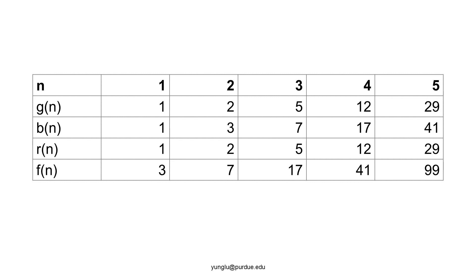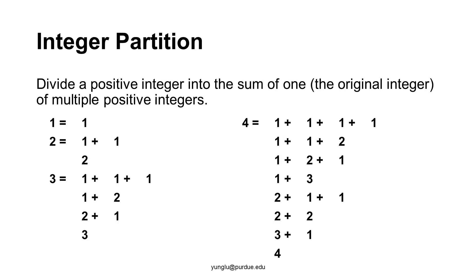The next problem is integer partition. This problem integrates multiple concepts related to recursion, and we will study it in detail over several lectures. The integer partition problem breaks a positive integer into the sum of one or several positive integers. If only one integer is used, it is the original integer itself. By allowing the original integer itself, this problem is slightly easier. If we want to partition 1, there is only one possible way — using 1 itself, because 1 is the smallest positive integer.